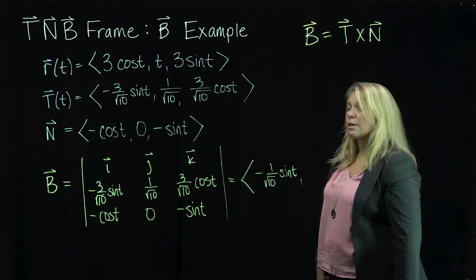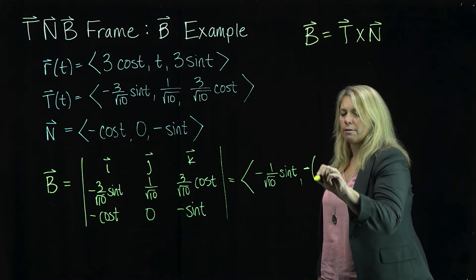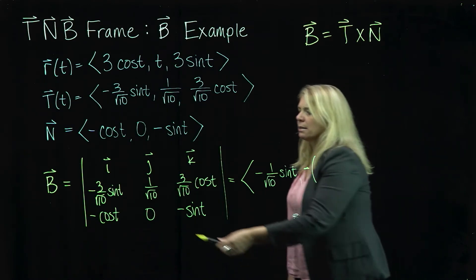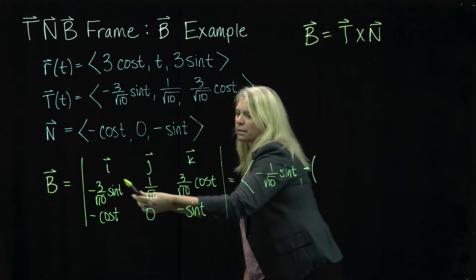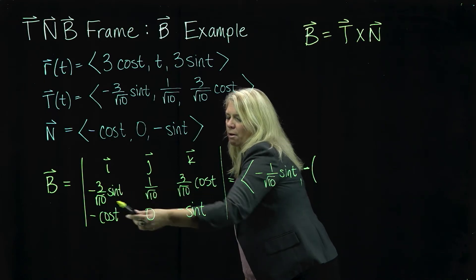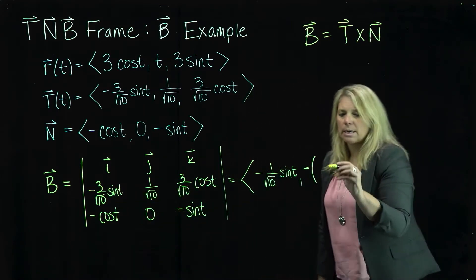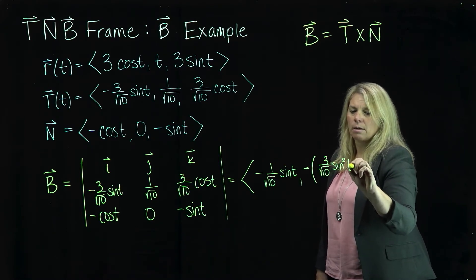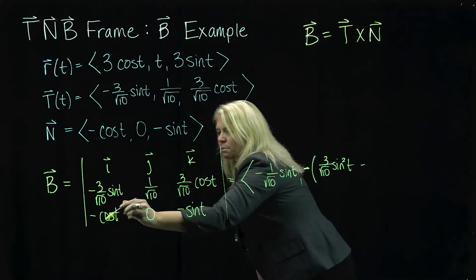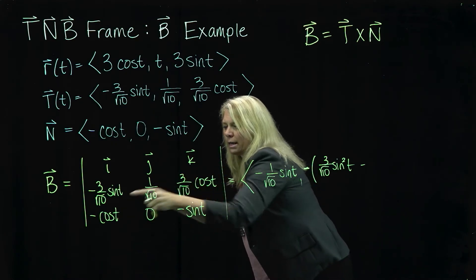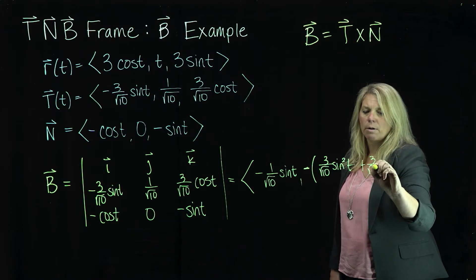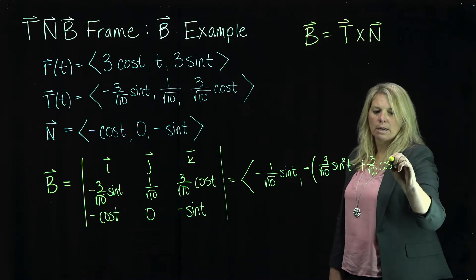And then in the J component, remember the minus sign out front of your cross product when you do the J component here. So a minus. And then I'm going to do this product. So that will be 3 over square root 10 sine squared T. Positive 3 over square root 10 sine squared T minus this product. So minus, and then I'll have a negative, so plus 3 over square root 10 cosine squared T.